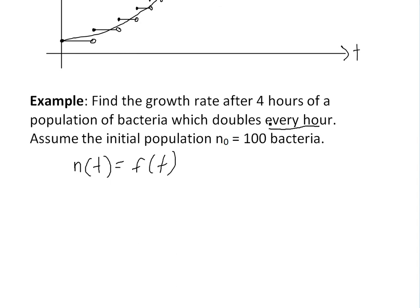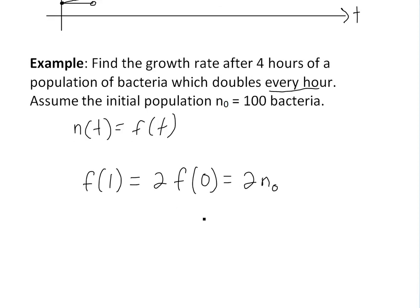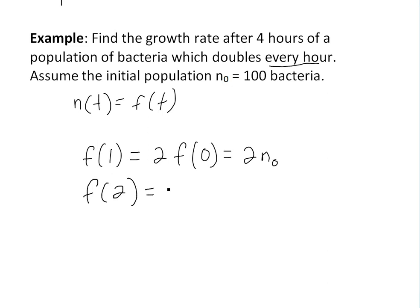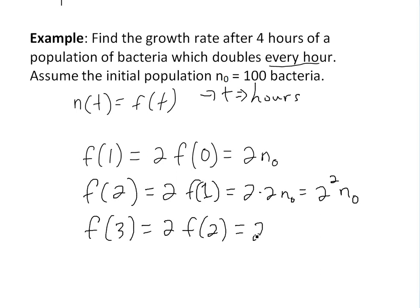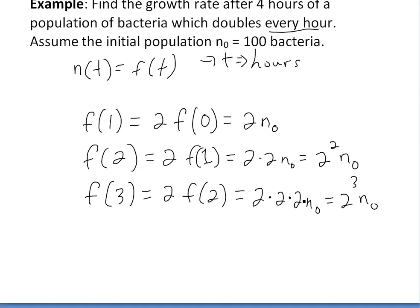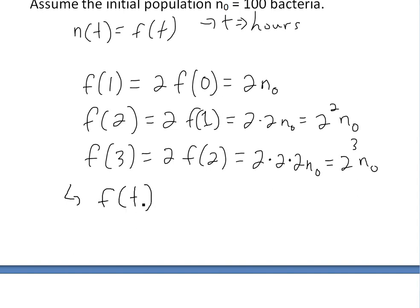We know that the bacteria doubles every hour. So after the first hour, it's going to be two times f(0). This is just n₀, so it would be 2n₀. Then f(2) equals two times f(1), which equals 2 × 2n₀ or 2²n₀. Then f(3), we're going to be doubling again. This is 2 × f(2), or 2 × 2²n₀, which equals 2³n₀. I'm using t in hours. As you can see, the pattern...